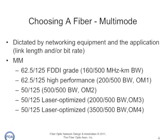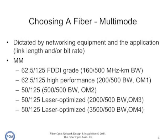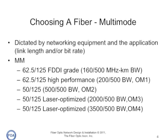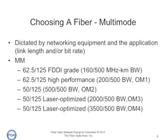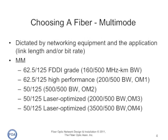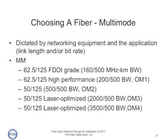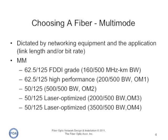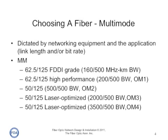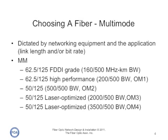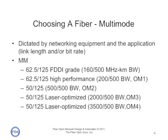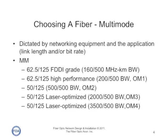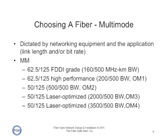Before gigabit networks running on multi-mode fiber, you basically would choose one fiber — FDDI grade — but now there are a number of special application fibers for higher and higher bandwidth that require you to make a choice among OM2, OM3, and OM4. It's all a matter of how far and how fast your network needs to transmit.